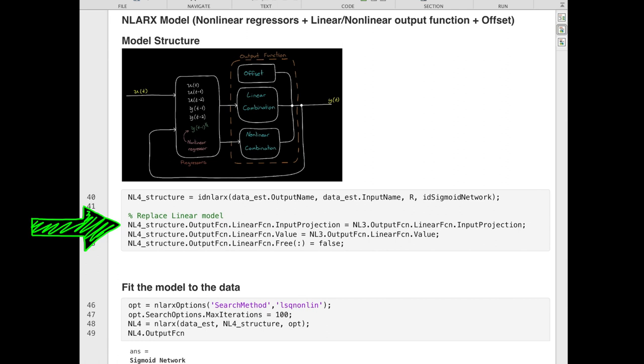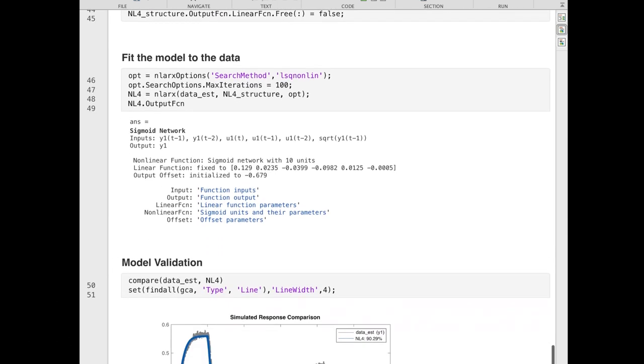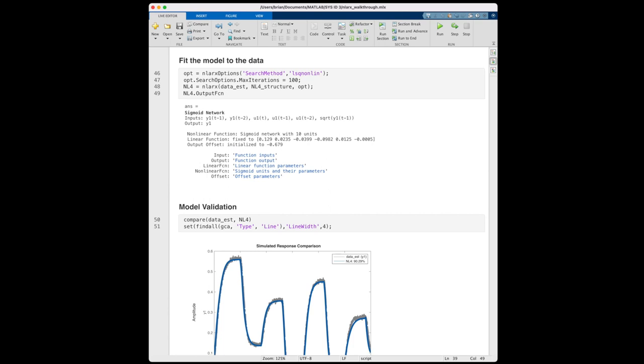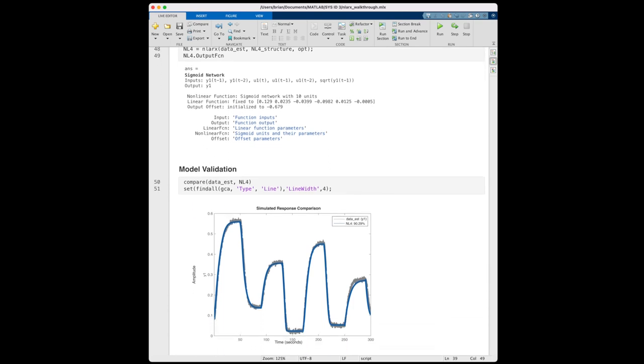Now that I have my chosen model structure, I want to replace the linear portion with what I calculated in the last section. So I'm replacing it with my NL3 model and then fixing the linear component so the optimization algorithm knows not to adjust it. Now I can call the NLRX function to learn the free parameters to get the best fit, and this is what it came back with. In addition to the linear model, it now has a learned sigmoid network with 10 units to capture those residuals. Check out how perfect this fit is. That non-linear component was able to model all of the residuals almost perfectly, which is great.